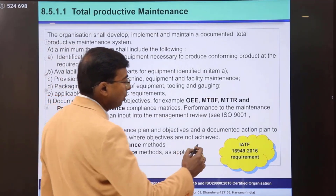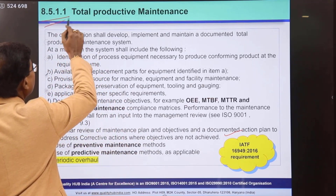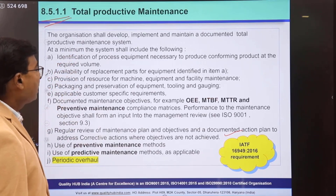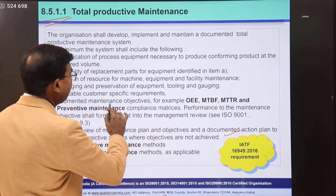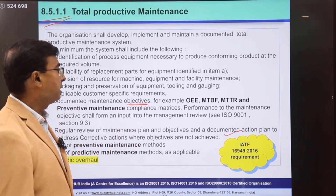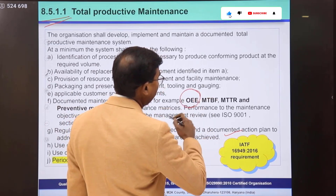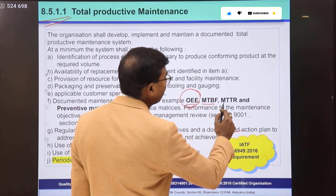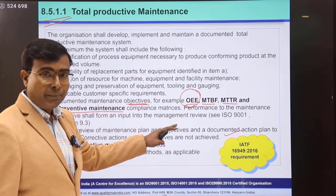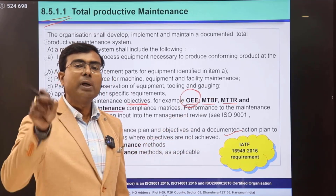As I mentioned, IATF 16949 is the automotive industry's quality management system standard. Clause 8.5.1.1 talks about Total Productive Maintenance. Going through that clause, there are some recommendations — it calls for documented maintenance objectives and recommends certain matrices to be measured, including Overall Equipment Effectiveness, Mean Time Between Failure, Mean Time to Repair, and Preventive Maintenance Compliance. OEE is now included as part of the quality management system itself in this very mature and systematic industry.